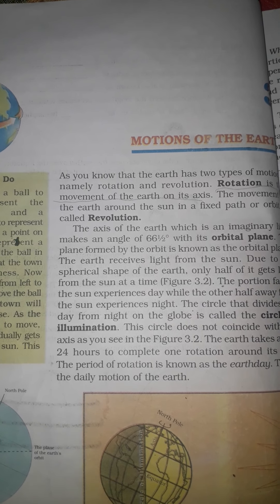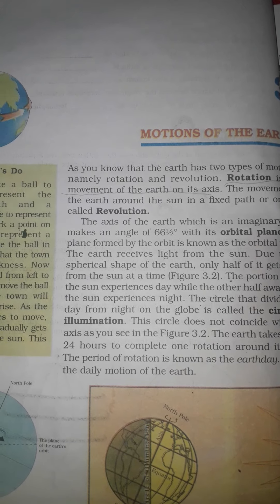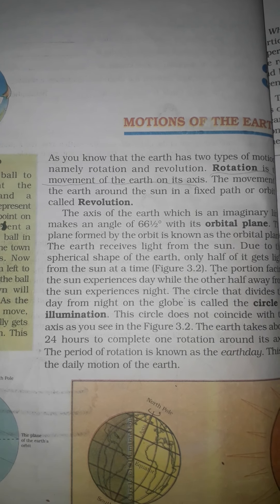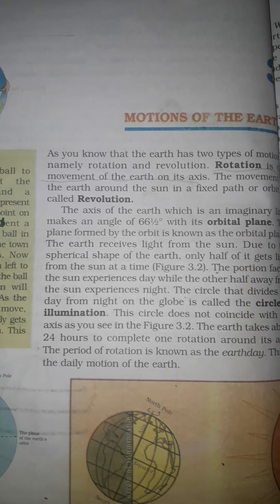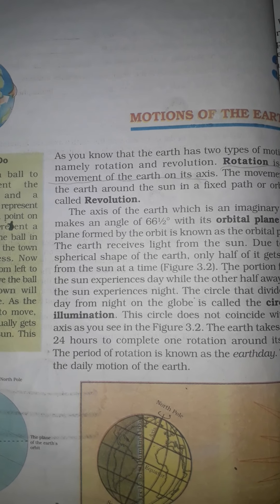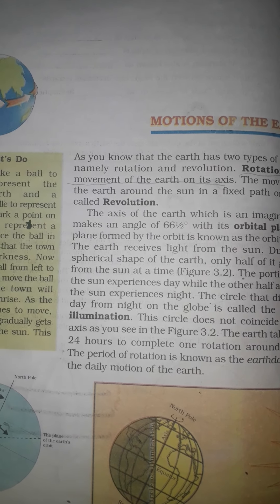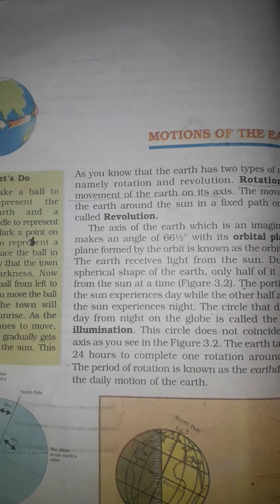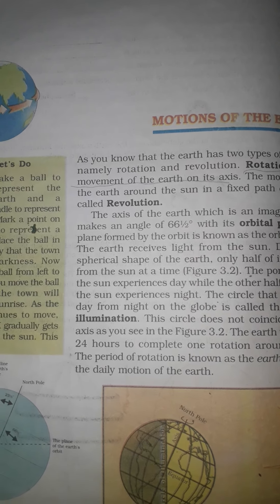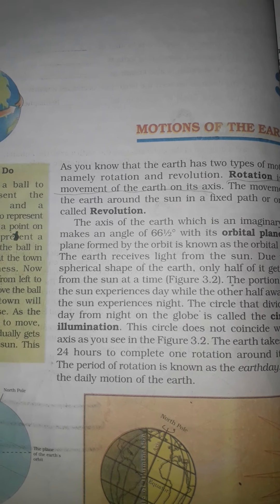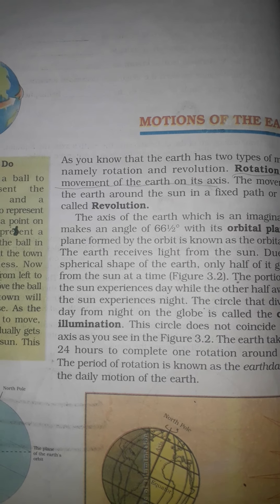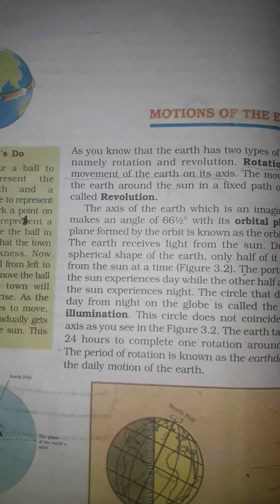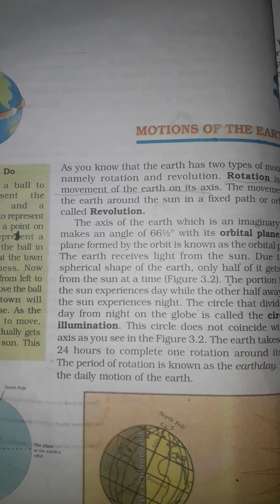The axis of the earth is an imaginary line that makes an angle of 66 and a half degrees with its orbital plane. The plane formed by the orbit is known as the orbital plane.